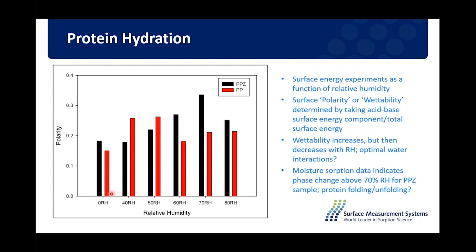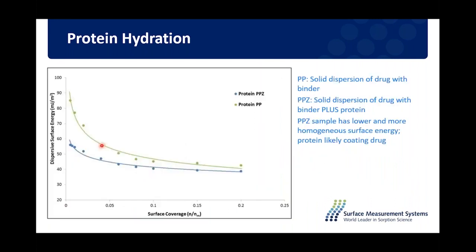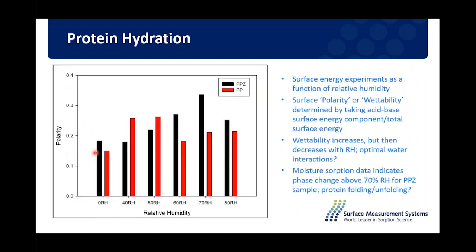These experiments can also be done at different relative humidities, looking at the polarity — the ratio of the dispersive to acid-base component. Looking at 0%, 40%, 50%, 60%, 70%, 80% relative humidity and so on, we can see that polarity changes as moisture is present versus dry conditions. Initially wettability increases but then decreases, and DVS moisture absorption data shows evidence of some structural change when reaching very high relative humidities.